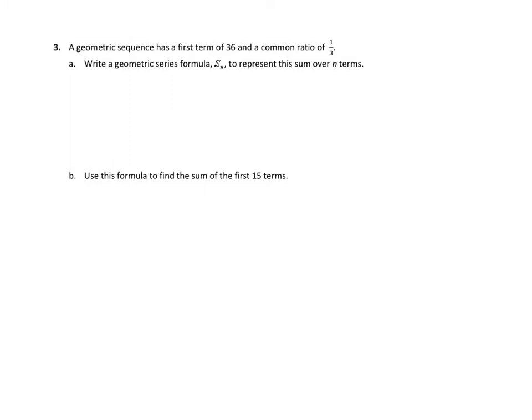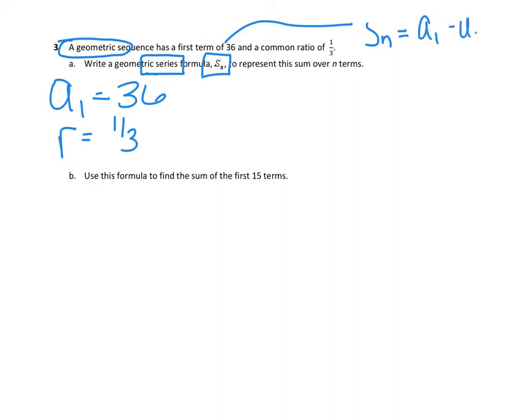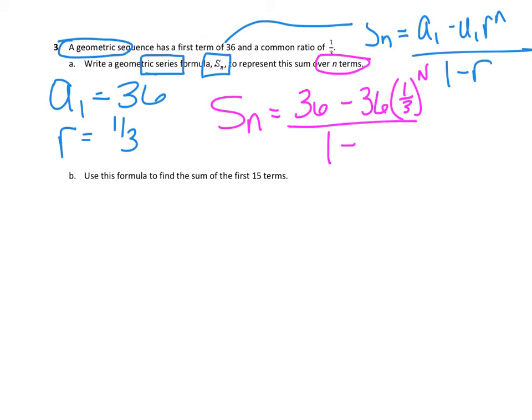Question 3. Write a geometric sequence that has the first term of 36 and a common ratio of 1/3. Geometric means we're multiplying. A sub 1 equals 36, my first term. My ratio is 1/3. Now it says, write a geometric series. Remember, series means that you're finding a sum of numbers using S sub n to represent the sum over n terms. So this is a formula we talked about the other day. It's given to you on the exam. So it's A sub 1 minus A sub 1 times r to the n, all over 1 minus r. All I have to do is carefully plug these numbers in. So S sub n equals 36 minus 36 times 1/3 to the n, all over 1 minus 1/3.